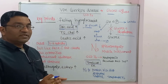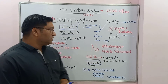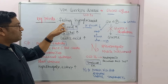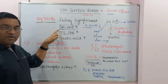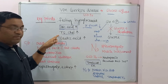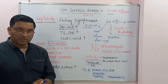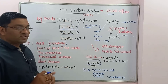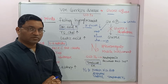These are the key points in the diagnosis of Von Gierke's disease: fasting hypoglycemia, hyperuricemia, hyperlipidemia, and lactic acidosis. These are the key diagnostic points for Von Gierke's disease.